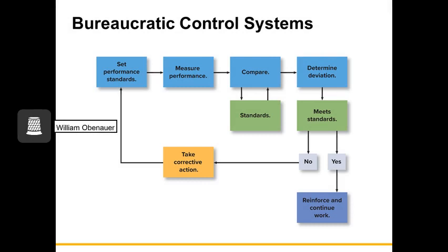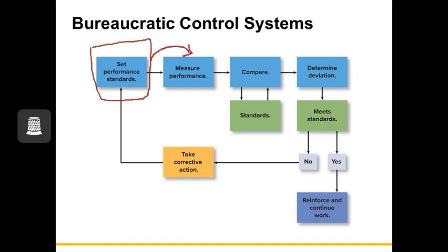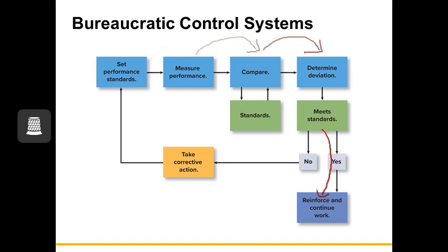When we use bureaucratic control systems, we go through a process that begins with setting performance standards. Once standards are set, we measure performance. After measuring, we compare performance to our standards and determine deviations. If performance has met or exceeded standards, we reinforce performance and continue. But if performance has not met standards, we take corrective action and reevaluate our performance standards.